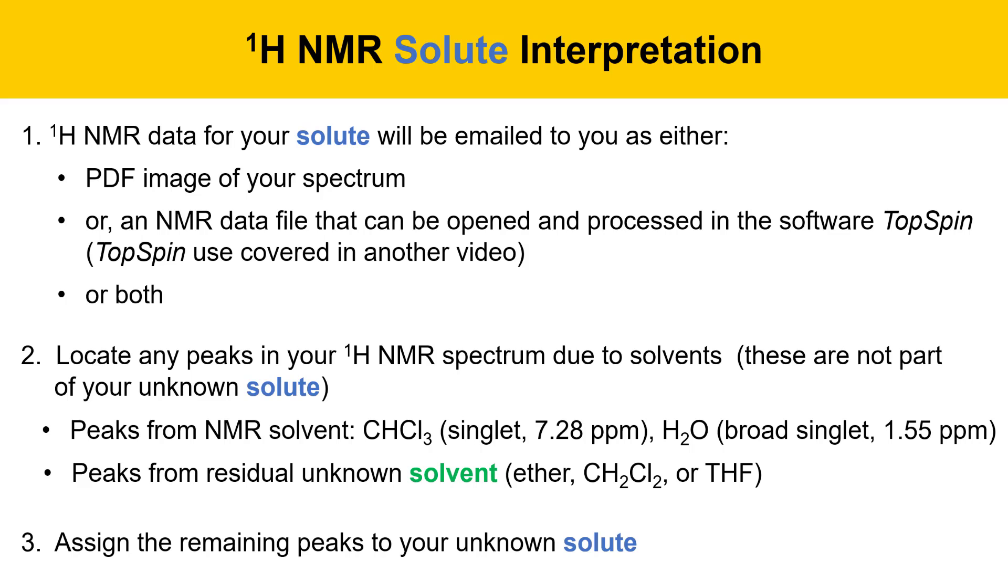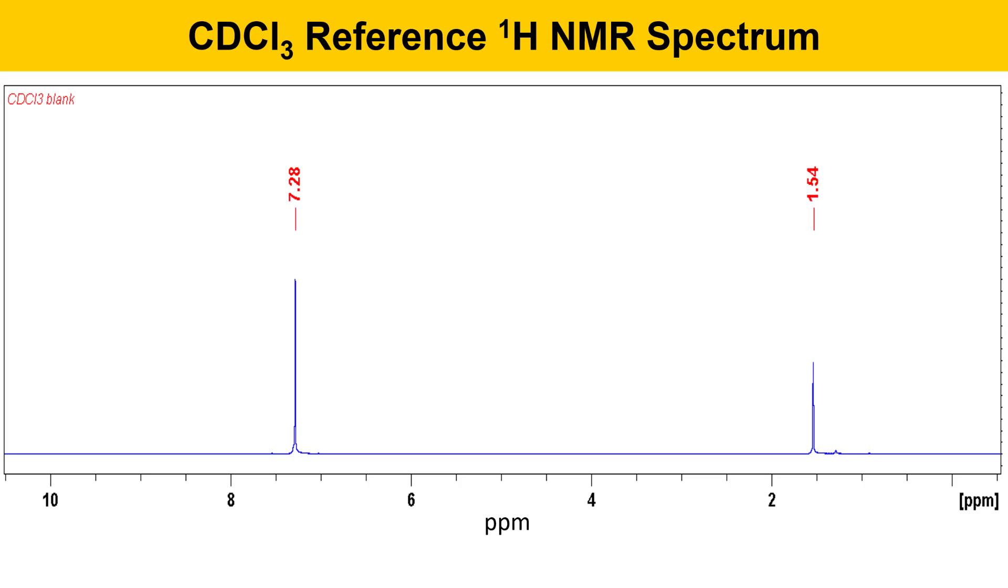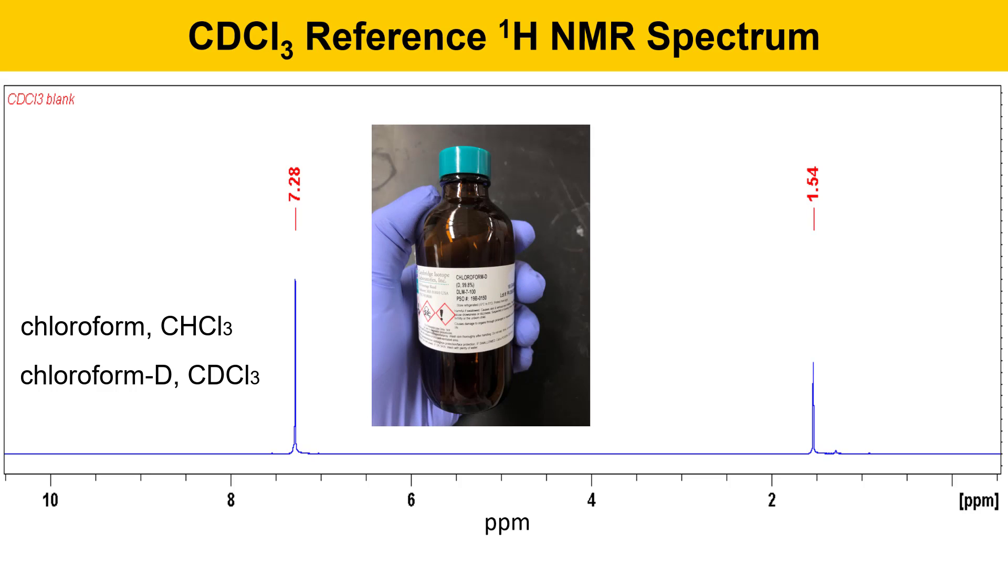Here's a reference proton NMR spectrum of the NMR solvent CDCl3. Chloroform has the formula CHCl3, and deuterated chloroform is CDCl3, where the deuterium has replaced the hydrogen. Deuterium is a heavy isotope of hydrogen that has one more neutron. It's also invisible in the proton NMR spectrum, so if we had pure CDCl3, there would be no peaks in this proton NMR spectrum. However, it's not 100% deuterated. The bottle of deuterated chloroform that we have is 99.8% D. That means there's 0.2% of CHCl3, and that's what's giving rise to the peak at 7.28 ppm.